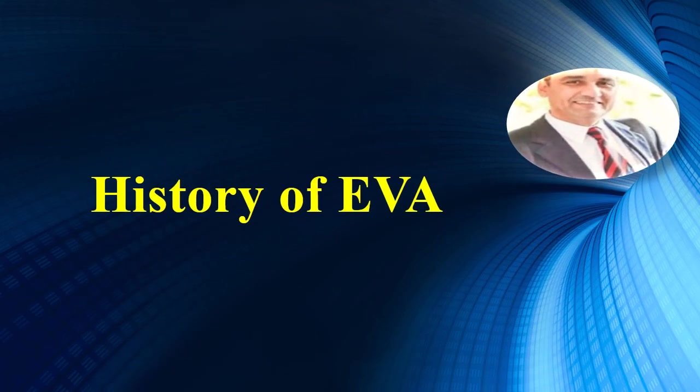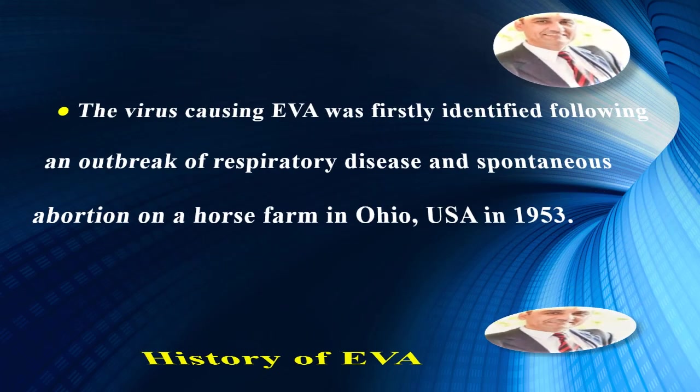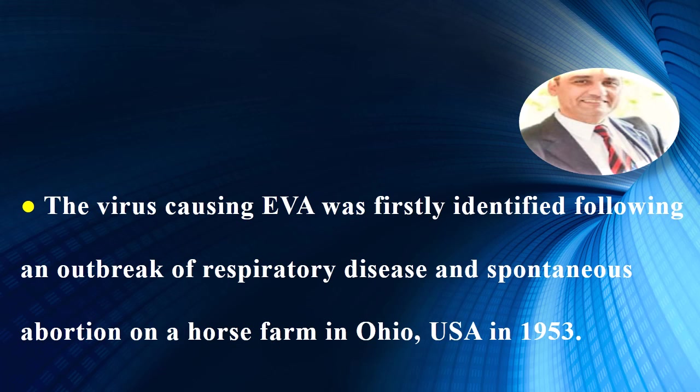History of equine viral arthritis disease: The virus causing equine viral arthritis was first identified following an outbreak of respiratory disease and spontaneous abortion in a horse farm in Ohio, United States of America, in 1953.